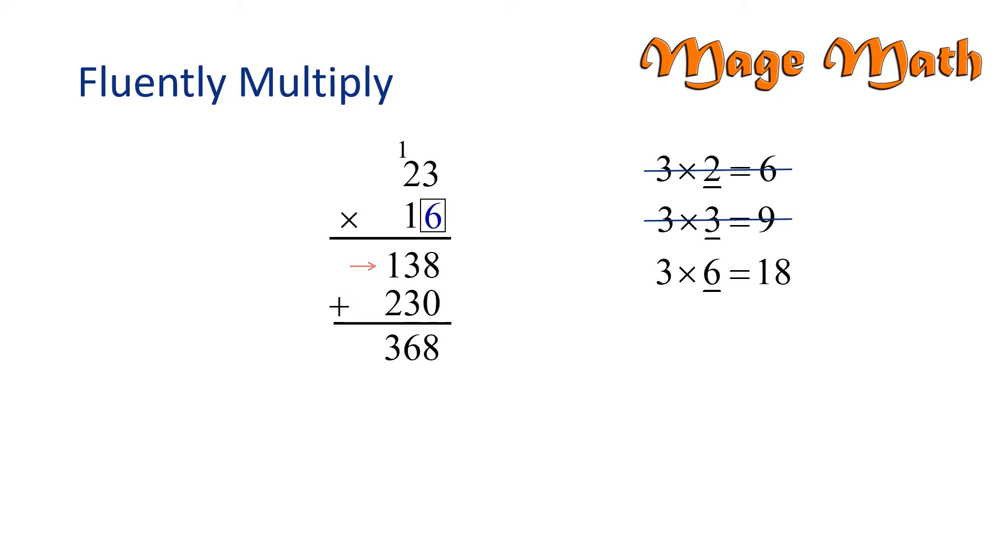Our next step would be to write zero as a placeholder and then multiply one times three and one times two, which gives us the twenty-three. When we would add these values, eight plus zero is eight, three plus three is six, and one plus two is three.